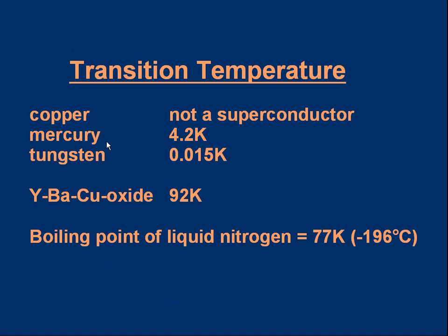Let's look at a few materials. Copper doesn't superconduct, so it doesn't have a transition temperature — even though it's a very good conductor at room temperature, it doesn't form a superconductor. Mercury does, though. Its transition temperature is 4.2 Kelvin. Mercury was the first superconductor to be discovered back in 1911 — it was cooled to this temperature with liquid helium. Another example is tungsten, with a very small transition temperature of 0.015 Kelvin.